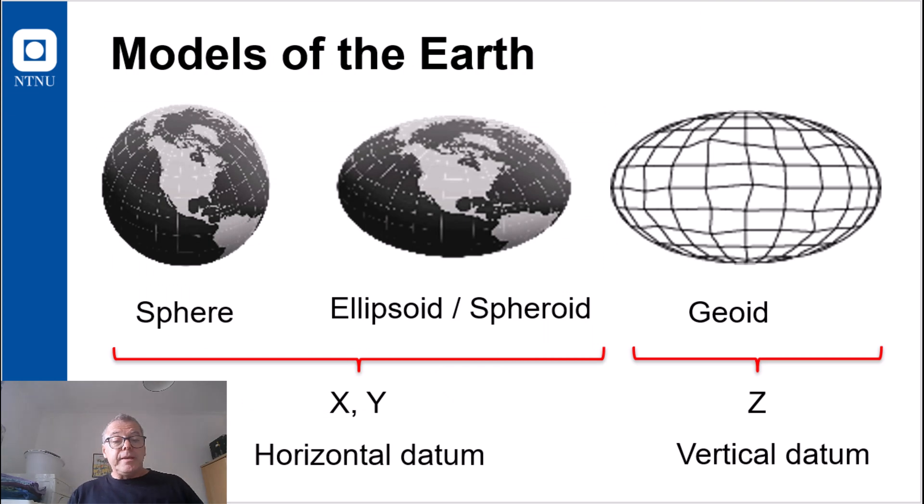The sphere, or the ellipsoid, these are central ingredients in what is often referred to as the horizontal datum, where we got the x and y coordinates from. Whereas the geoid is a central integral ingredients in what is often referred to as the vertical datum, where we get the z coordinates, or the height.